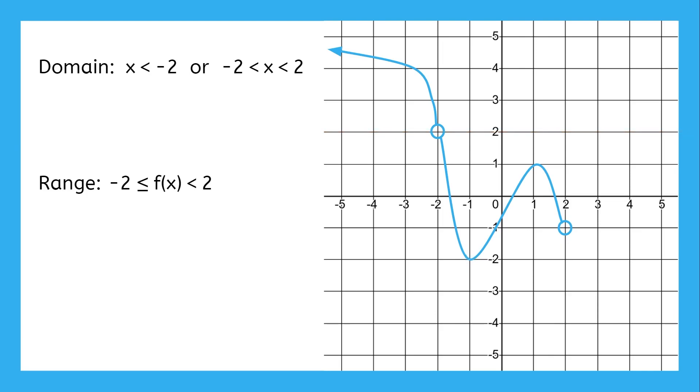That's not all the outputs, though. There are more outputs above two going up forever. So we have a second interval of all values greater than two.